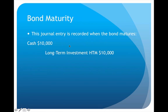And then eventually in five years, this investment will mature. Once it matures, we will record a journal entry when we receive the money: a debit to cash for $10,000, and we credit and remove the long-term investment held to maturity for $10,000. So that's an example of a held to maturity bond.